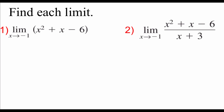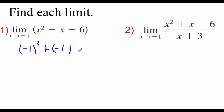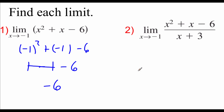Two more examples to look at. For number 1, we've got the limit of x squared plus x minus 6 as x approaches negative 1. We use direct substitution to replace x with negative 1: negative 1 squared plus negative 1 minus 6. Squaring negative 1 gives positive 1; adding negative 1 is like subtracting 1, then minus 6. The 1 and negative 1 cancel each other out, so our answer is just negative 6.